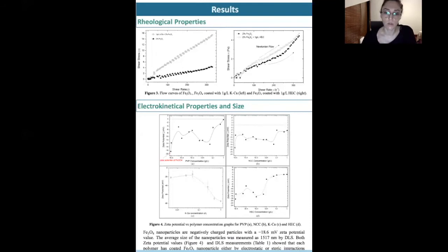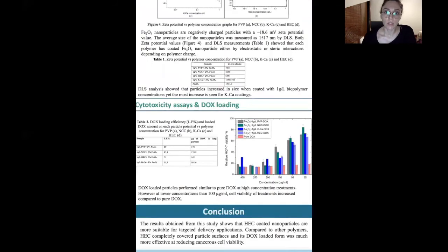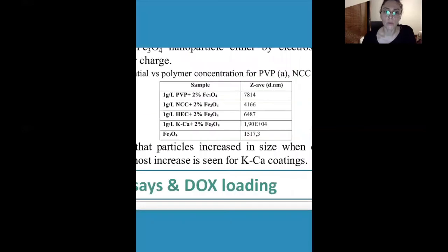Later, if we look at the DLS measurements which give us average particle size, we can see that particle sizes increase as it is coated with each polymer. The most increase was seen in kappa-carrageenan and the least was in nanocrystalline cellulose.